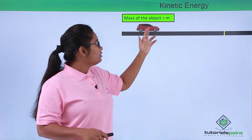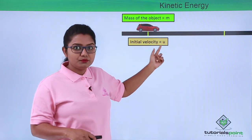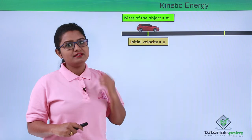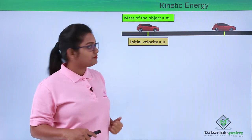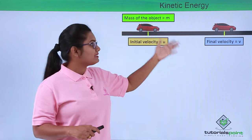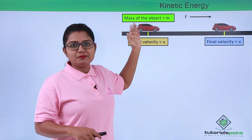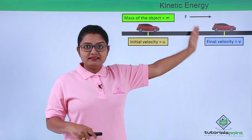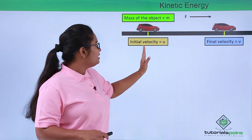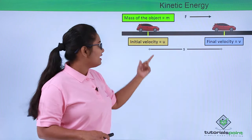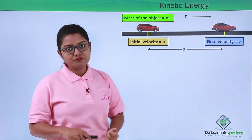We will take the mass of the car to be m. At the first position, the car had an initial velocity u. At the second position, the final velocity of the car is v. There must be a force F exerted on the car which makes it move from the first position to the second, and the distance between the initial and final point we will take as S.